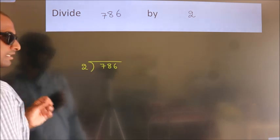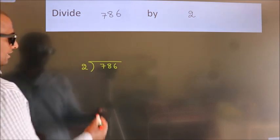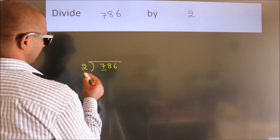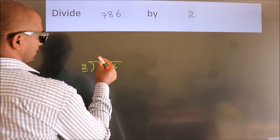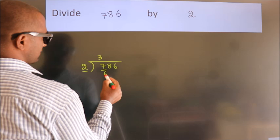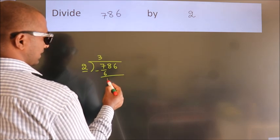This is your step 1. Next, here we have 7, here 2. A number close to 7 in 2 table is 2 times 3 is 6. Now we should subtract. We get 1.